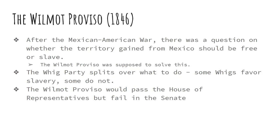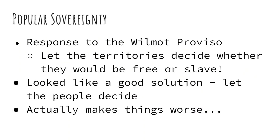The Whig Party is going to split over what to do here. Some Whigs favor slavery, some do not, and that's going to lead to the demise of the Whig Party and the rise of a new party. The Wilmot Proviso is also going to create this idea of popular sovereignty — basically, let the territories decide on their own whether they want to be free or slave, everything based on popular vote. It looks like a good solution, but it's actually going to make everything worse. Northerners thought people would choose freedom; southerners thought people would choose slavery, and all along they were trying to keep the balance between slave and free states equal.